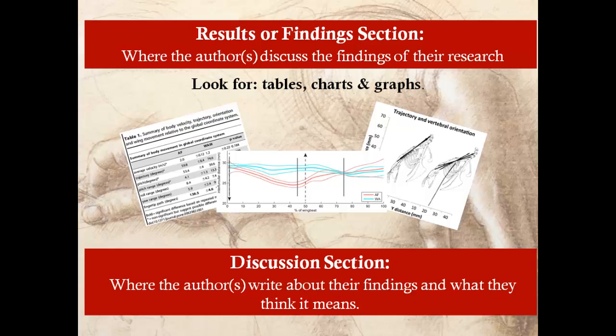The discussion section is where the authors write about what they found and what they think it means. The authors may also draw some conclusions about the research and what significance it has in this section. This section will also tell you what some of the issues were with the research or using a specific population for a research study.